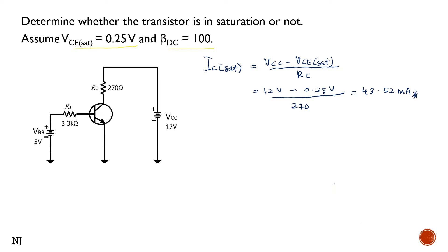Next we need to check whether the base current IB is large enough to produce the IC saturation or not. We know that VRB equals VBB minus VBE. Therefore, IB equals 5V minus 0.7V over RB 3.3 kilohms, giving us IB of 1.3 milliamps.